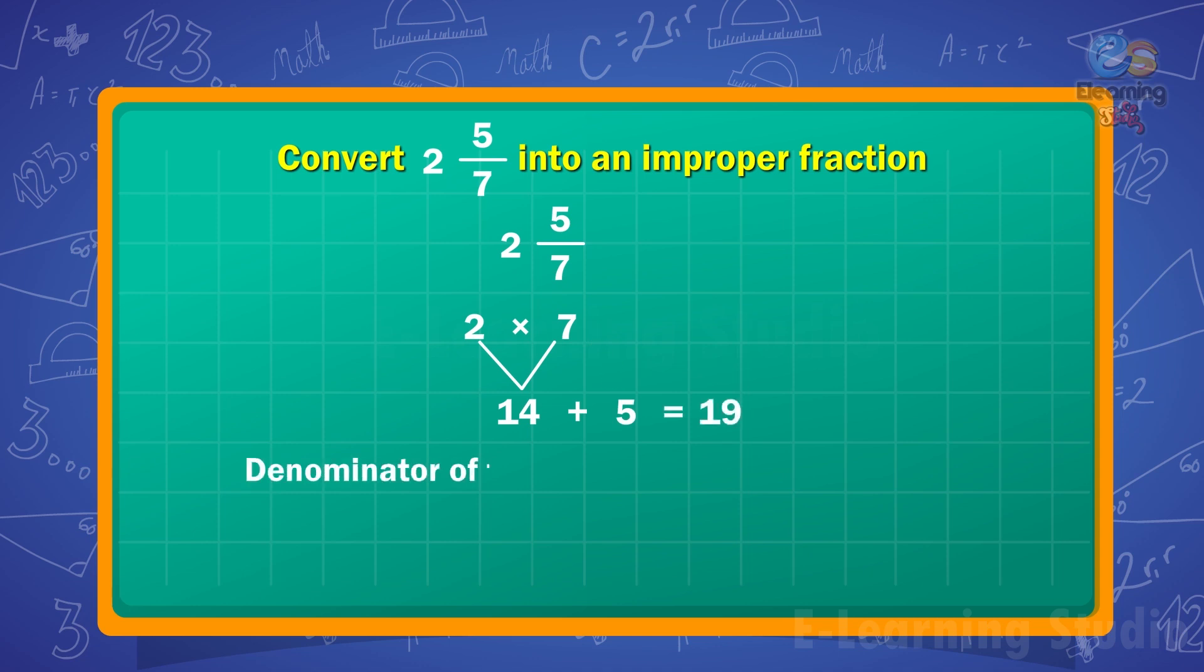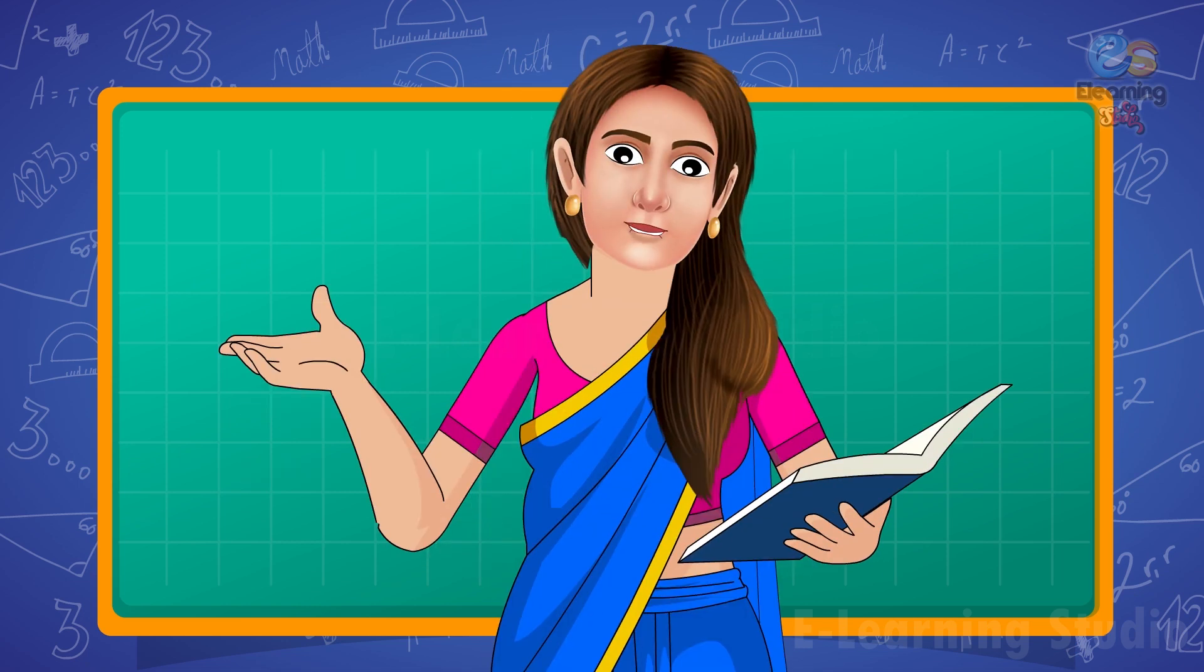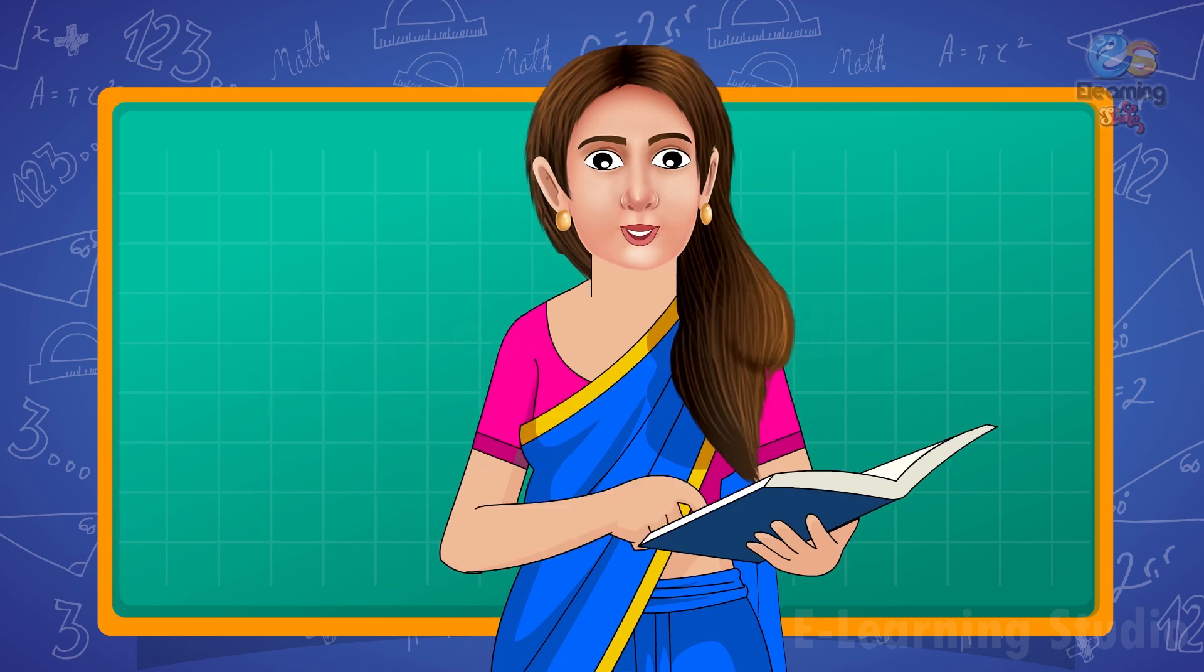Denominator of the improper fraction is equal to 7. So 2 and 5 upon 7 is equal to 19 upon 7. Children, hope this is clear to all. Thank you and happy learning.